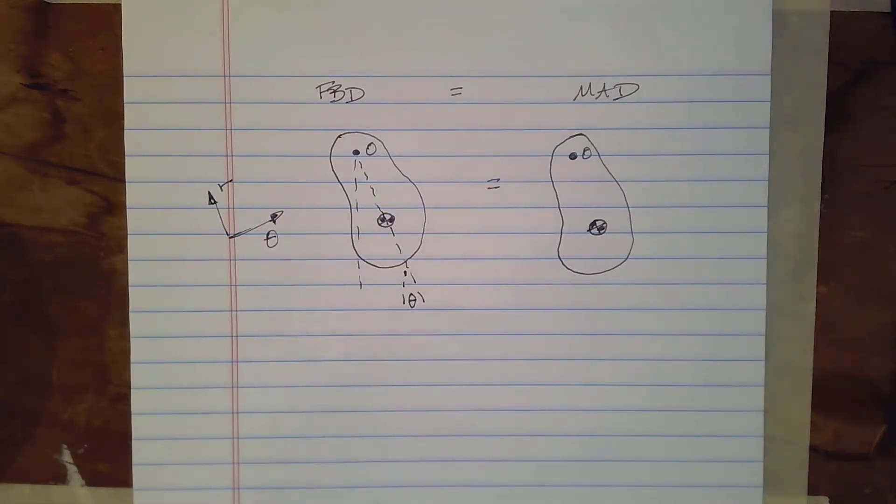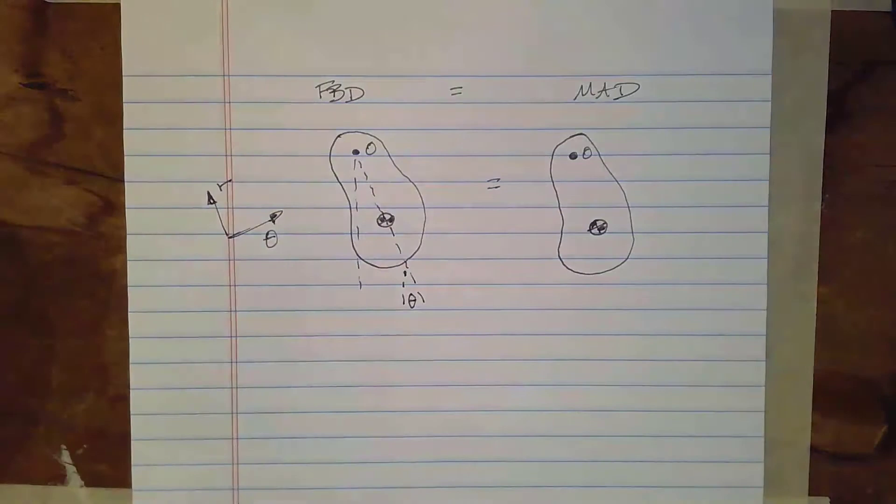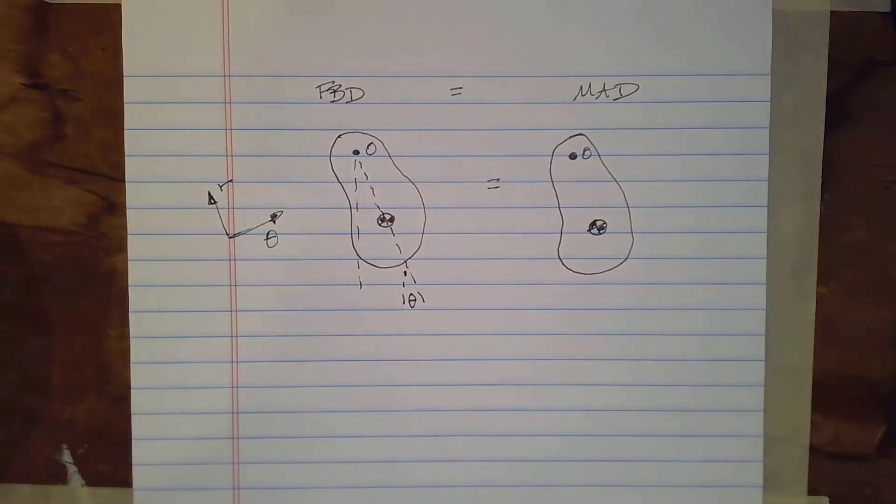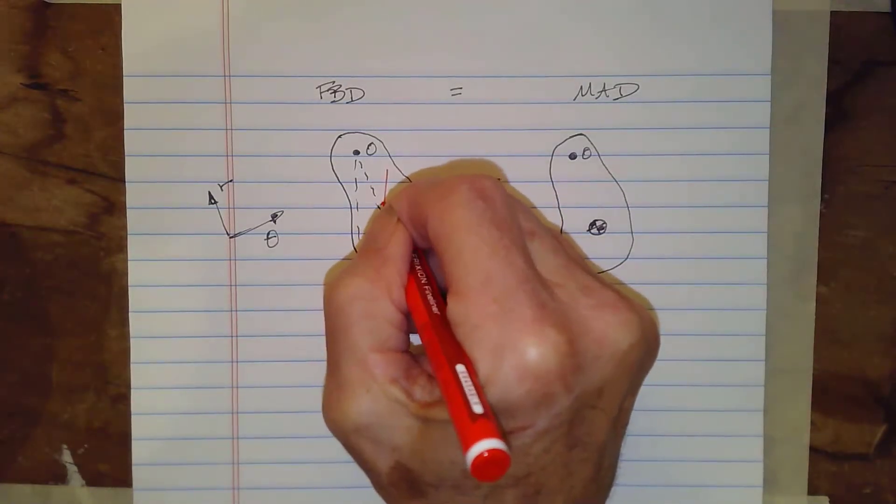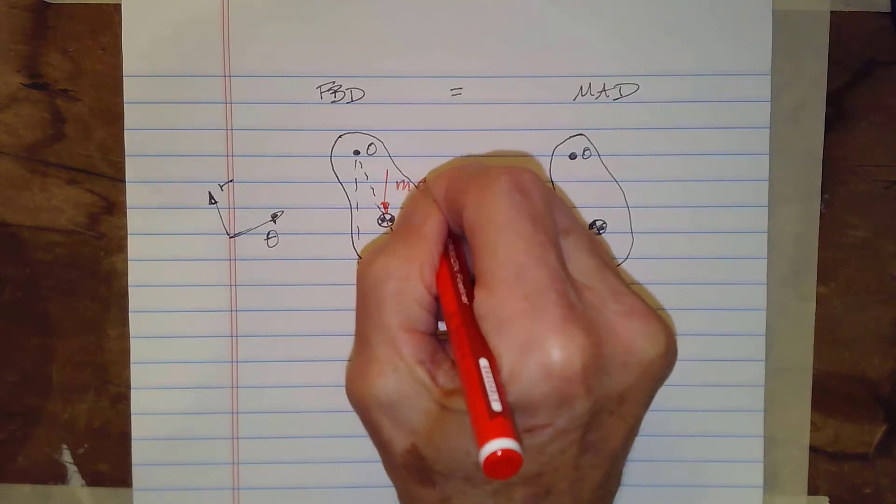Okay. So I'm just establishing those as our framework in which to work. And now we need our forces on the object on the FBD. So we know we have gravity acting down. So this is going to be Mg.